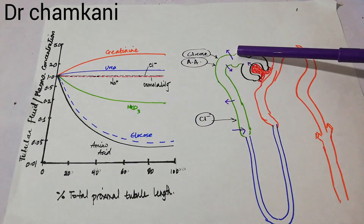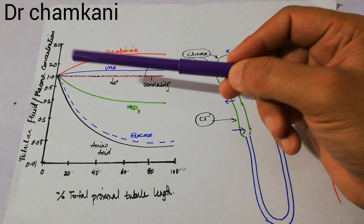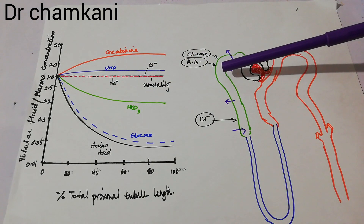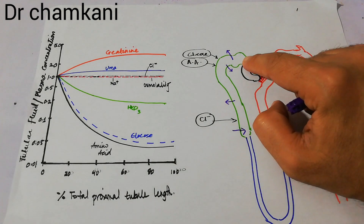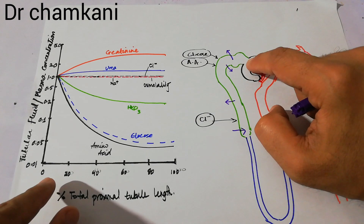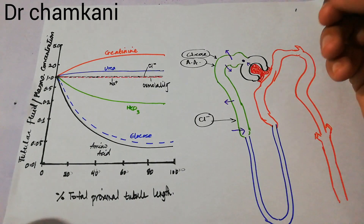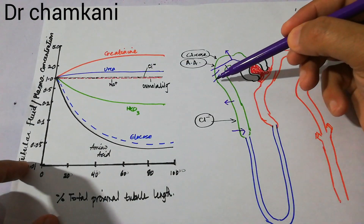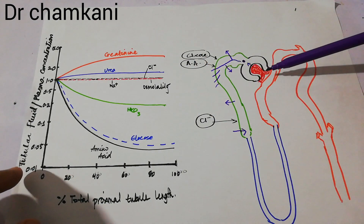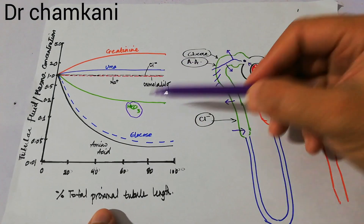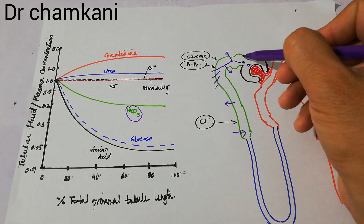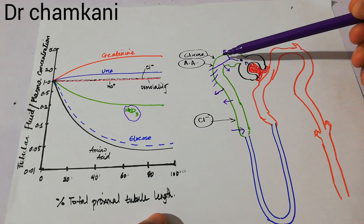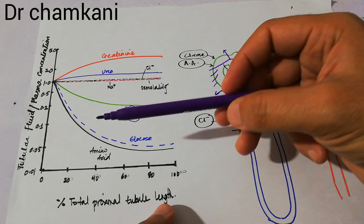Glucose is being reabsorbed and its concentration along the length of the proximal tubule keeps on decreasing in relation to its concentration in the plasma. At the start of the proximal tubule, glucose concentration in the tubule equals its concentration in the plasma, so its level starts at 1. Then as glucose moves along the tubule it is being reabsorbed and its concentration keeps on decreasing because it is entering the blood. The same is true for bicarbonate, but its curve is a little higher than the glucose and amino acids curve — bicarbonate is also reabsorbed but not as much as glucose, so its concentration decreases but not as sharply.